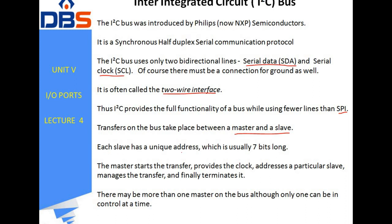Each slave has a unique address, which is usually seven bits long, though it can also operate with a ten-bit address. The master starts the transfer, provides the clock, addresses a particular slave, manages the transfer, and finally terminates it. The clock for the slave is provided by the master itself.